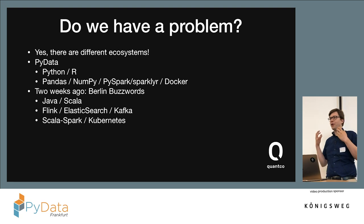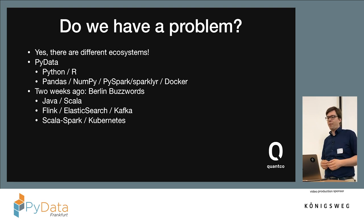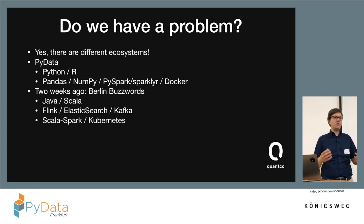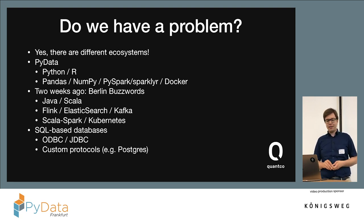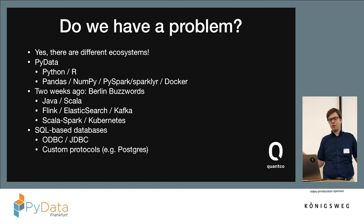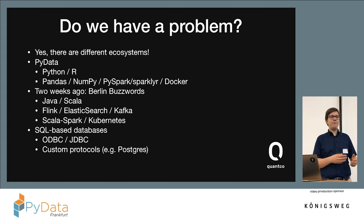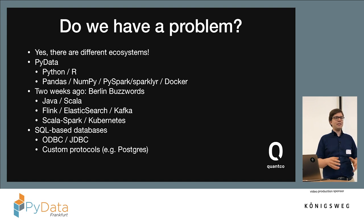At Berlin Buzzwords, people want to code in Scala and Java. There's not really anyone taking you seriously if you say you work full-time with Python. People there are concerned about scaling with Flink or Elasticsearch, and everyone using Spark uses Scala — no one takes you seriously if you say PySpark. And there's a third community people often forget, which is huge: SQL-based databases, where the main interfaces are JDBC, ODBC, or custom protocols like Postgres. But you see three different communities, and typically in a bigger company, all three exist with people in their silos, not talking to each other.